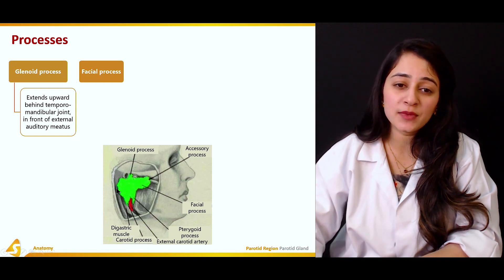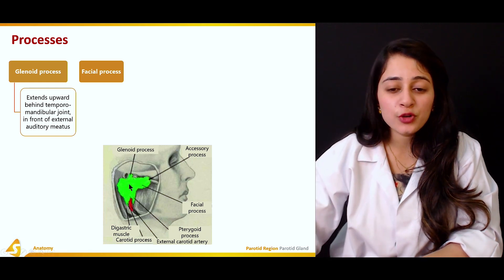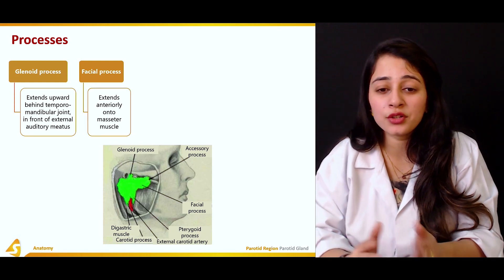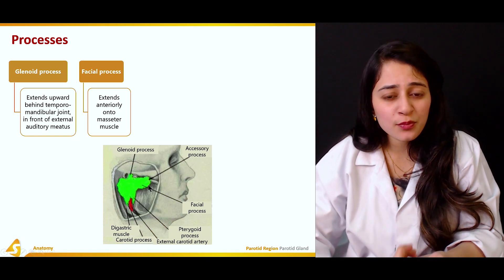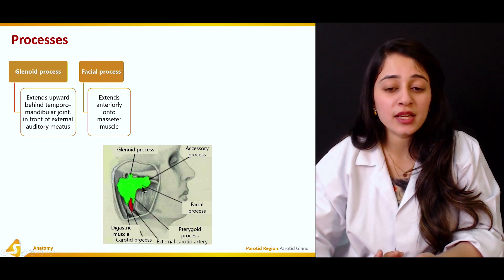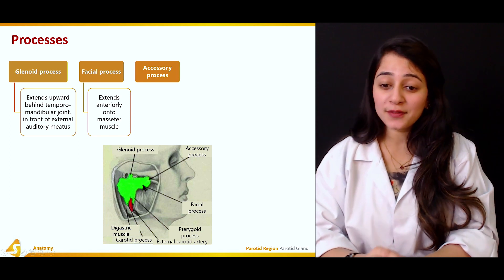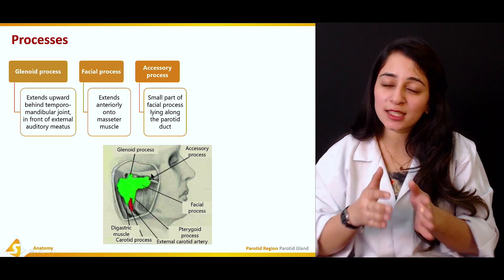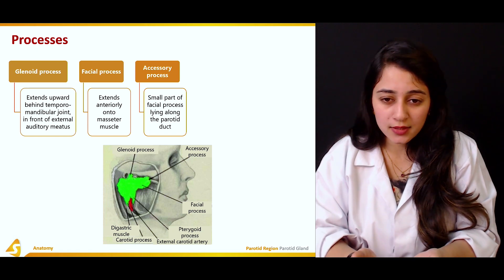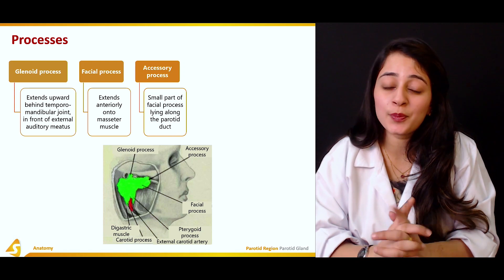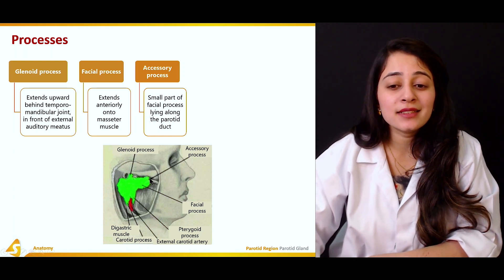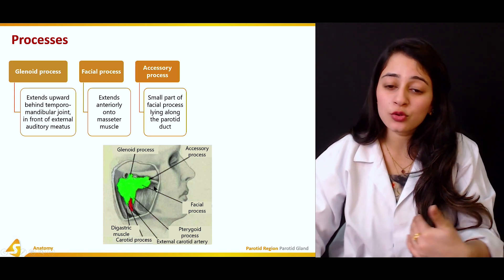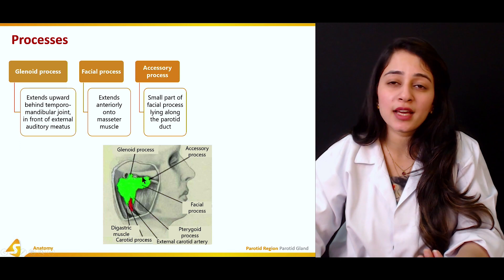The next process is the facial process, which extends anteriorly onto the masseter muscle, covering it. We also have the accessory process, which is a small part of the facial process lying along the parotid duct.